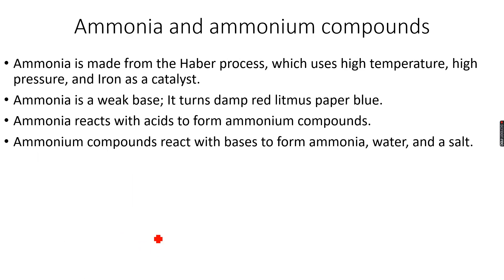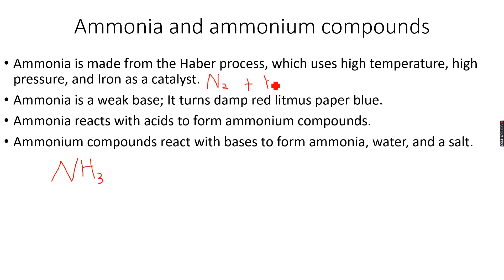Now, ammonia and ammonium compounds. Ammonia is NH₃, a compound of nitrogen, and it is made from the Haber process. In the Haber process, nitrogen combines with hydrogen gas in a reversible reaction to give ammonia gas. This reaction uses a high temperature, a high pressure, and iron as a catalyst.